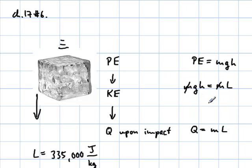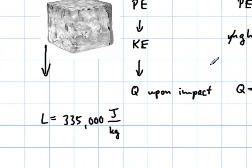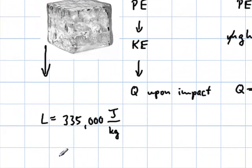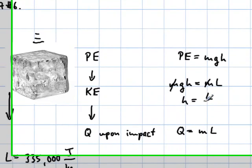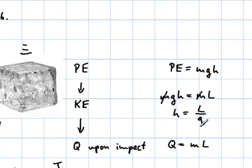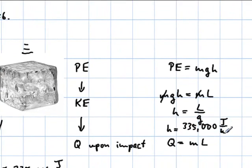So here we now have the height as L divided by G or 335,000 joules per kilogram divided by gravity.